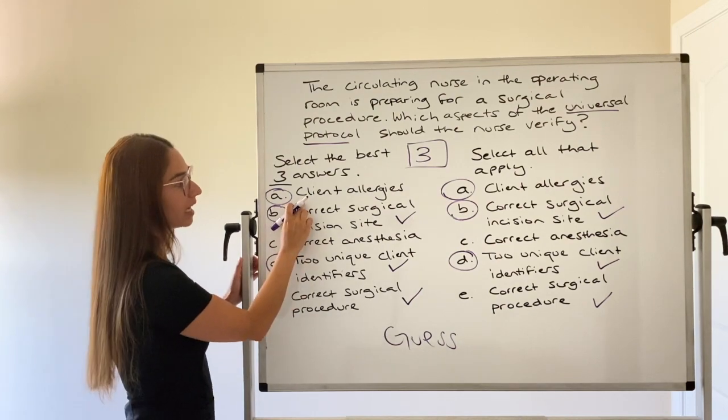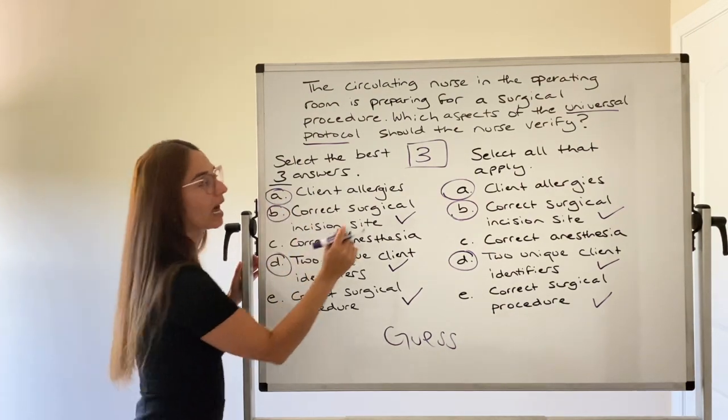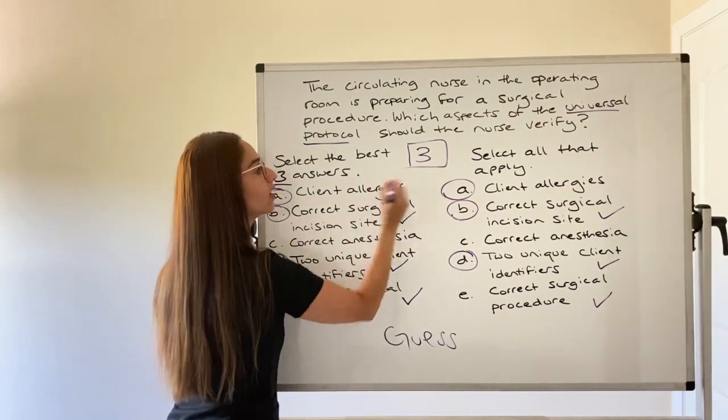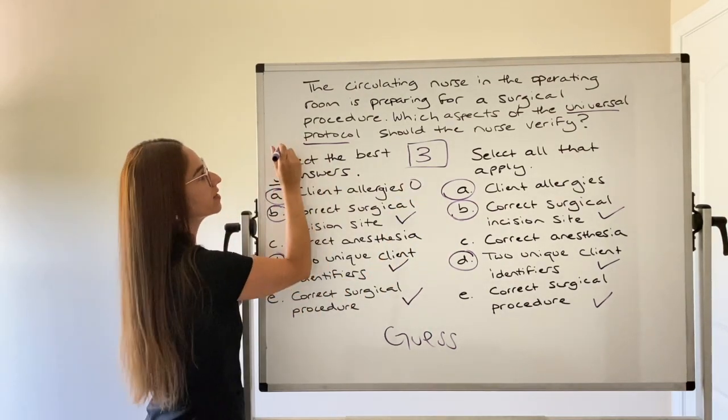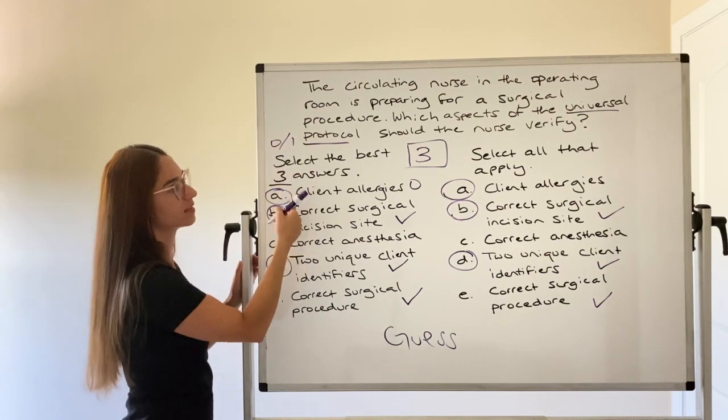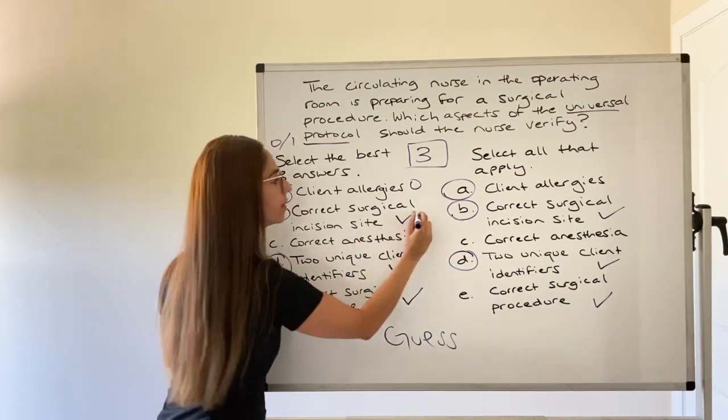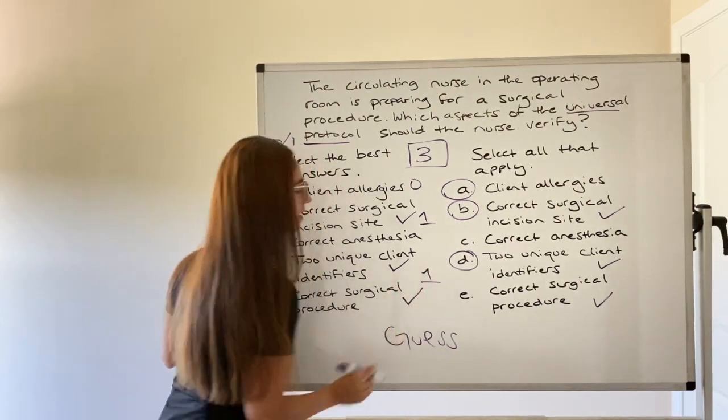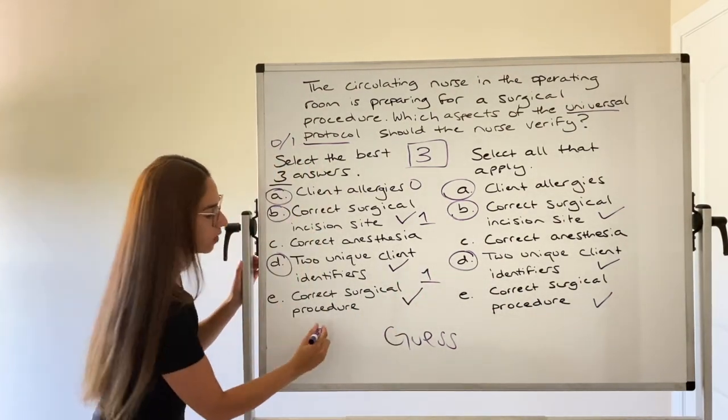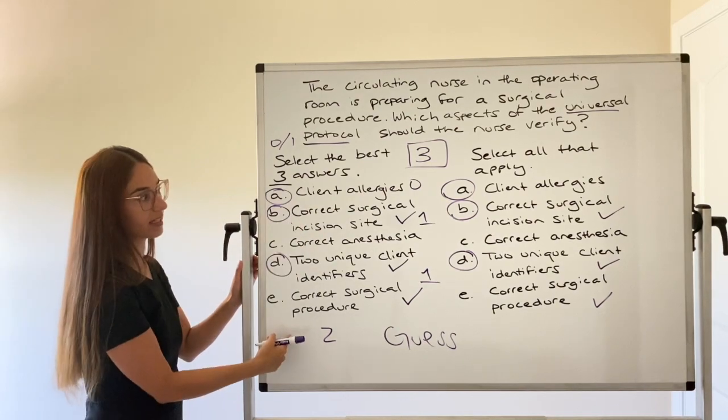Now client allergies, I didn't get it, it doesn't take away one. It just gives me zero points for this zero-one scoring model on select N. And then I got one point for that one. And I got one point for this one. So I got a total of two points for the select N.